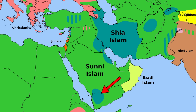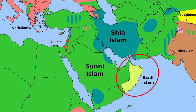Northern Yemen and neighboring parts of Saudi Arabia are Shia, while the rest of Yemen is Sunni. This divide, coupled with the fact that the north and south have only been unified since 1990, contributes to the tensions in the Yemeni civil war. The country of Oman has its own sect of Islam, called Ibadism, which predates the Sunni-Shia split.